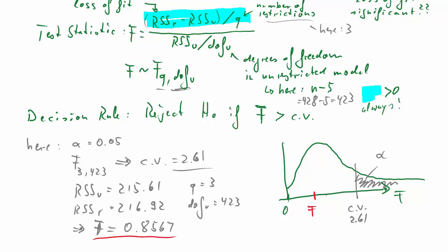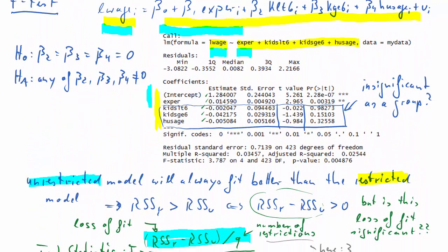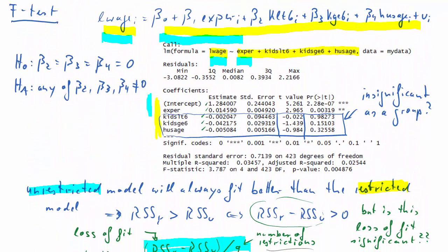So relative to our critical value, that's to the left of the critical value, it's smaller. So it's in the do-not-reject region. Only if it was larger than 2.61, we would reject the null hypothesis. Our conclusion is do-not-reject H0. What does that mean in the context of our example?